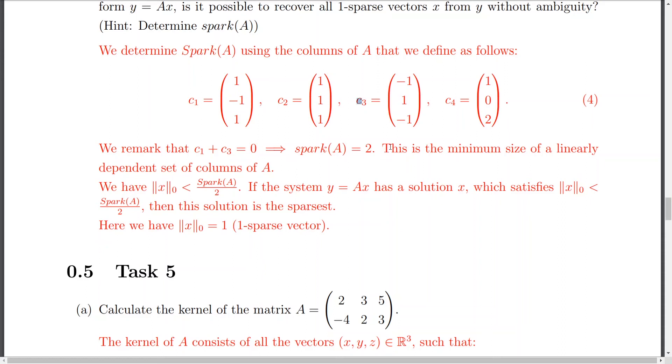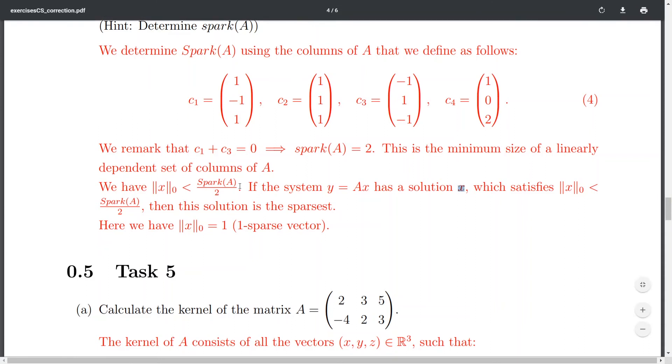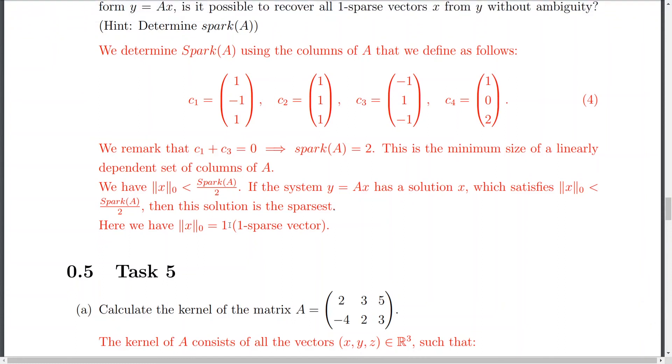And, of course, this is the minimum size of a linearly dependent set of columns of A. And, here we have, like as a next step, we calculate the L0 norm of X. It's like it should be smaller than spark A divided by 2. And, if the system Y equals AX has a solution X, which actually satisfies this inequality, then the solution is the sparsest. And, here we have the norm 0 of X is equal 1. So, we have a 1 sparse vector.